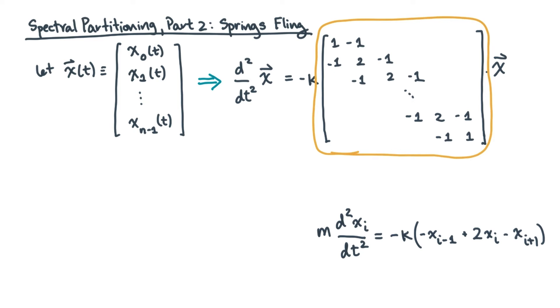So does this matrix look familiar? Why, it's nothing more than a graph Laplacian. In particular, it's the graph Laplacian for a line graph.